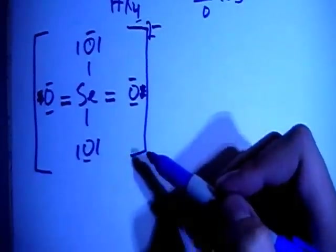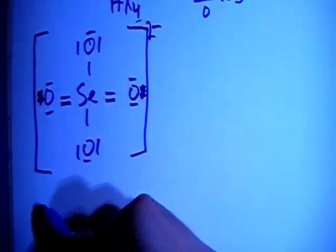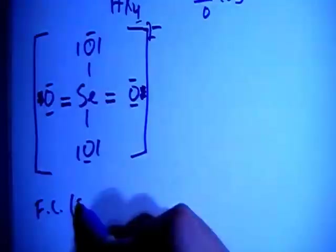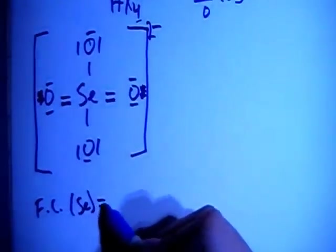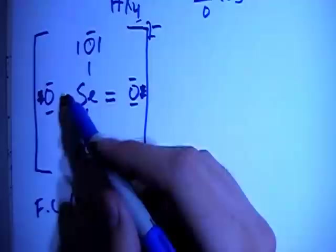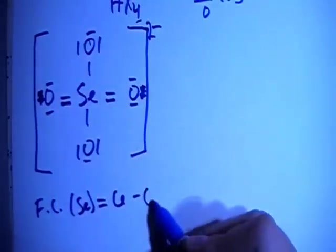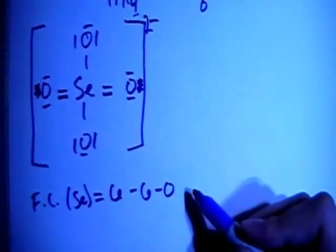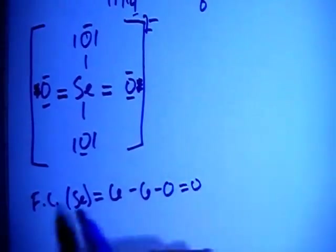So let's go ahead and check the formal charge on this compound. The formal charge on the selenium in the center is going to be the 6 valence brought in, minus 6 bonds, minus 0 non-bonding electrons. So that's a formal charge of 0.